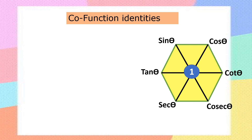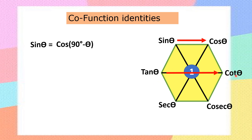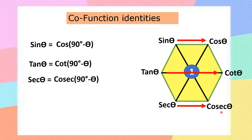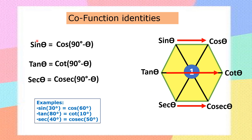Now let's learn the co-function identities using the same hexagon. Taking ratios horizontally across: sin theta equals cos(90° − theta). Tan theta equals cot(90° − theta). Secant theta equals cosecant(90° − theta). For example, sin 30° equals cos 60°; tan 80° equals cot 10°; sec 40° equals cosecant 50°. You can use these identities to find values of trigonometric ratios.